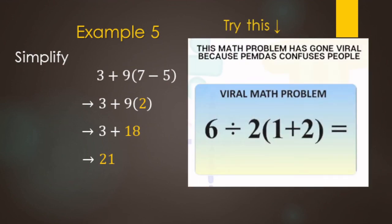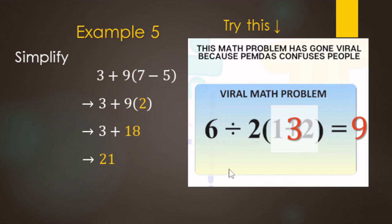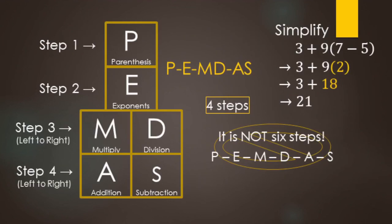Now let's try this viral math problem. The correct answer is 9. Parentheses first: 1 plus 2 makes 3. Then multiplication and division from left to right: 6 divided by 2 makes 3, times 3 makes 9. Remember: PEMDAS is 4 steps, not 6. Parentheses and grouping symbols, then exponents, then multiplication and division from left to right together, then addition and subtraction at the very end. Multiplication and division are done all at once, not multiplication then division separately.